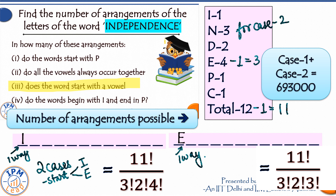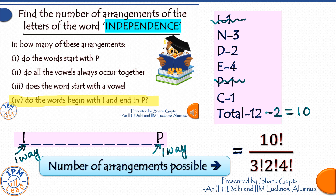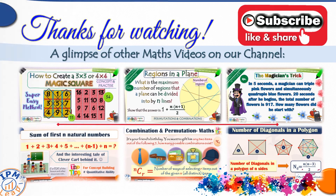In how many arrangements does the word start with a vowel? If it starts with a vowel it starts either with I or with E, so we add up arrangements for these two cases. Finally, in how many arrangements does the word begin with I and end in P? We fix I in the first place and P in the last place — each in one way. For the 10 letters in between, 3 are N's, 2 are D's, and 4 are E's, so they can be arranged in 10! / (3! × 2! × 4!) ways.